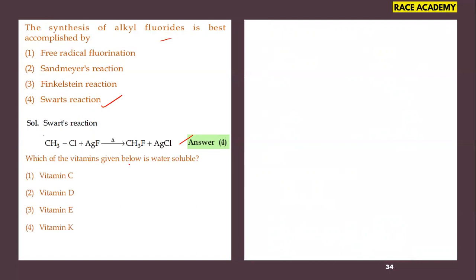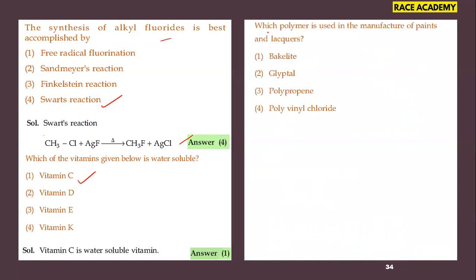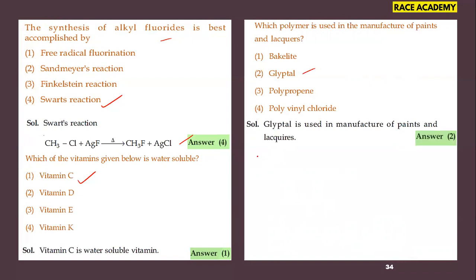Which of the given vitamins is water soluble? Vitamin C is a water-soluble vitamin, so the first option is correct. Next: which polymer is used in the manufacture of paints and lacquers? Glyptal is the most important polymer used in the manufacture of paints and lacquers, so the second option is correct.